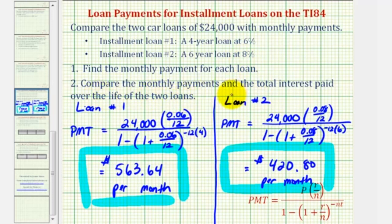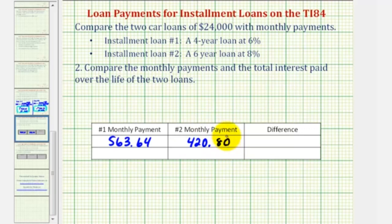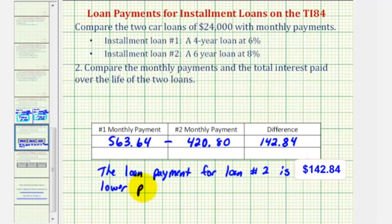Comparing the monthly payments: loan one has a monthly payment of $563.64, and loan two has a monthly payment of $420.80. Subtracting these, the difference is $142.84. So the monthly payment for loan two is $142.84 lower per month, but the payments would continue for two more years since loan one is for four years and loan two is for six years.